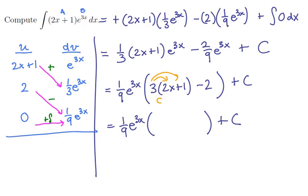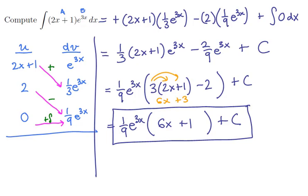All right, here we go. There's the 6x plus 3. And we'll take away 2 to get 6x plus 1. And here's our final answer. And you should compare this with the one that we did before.